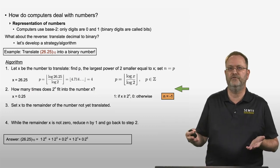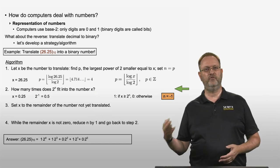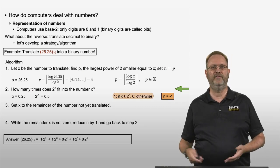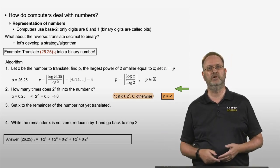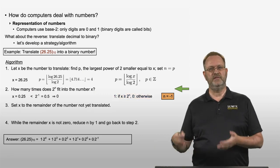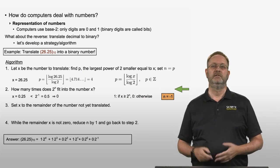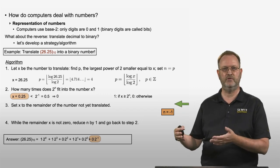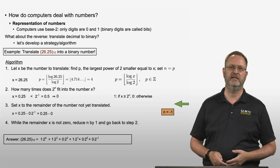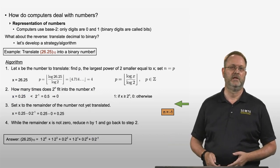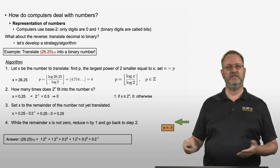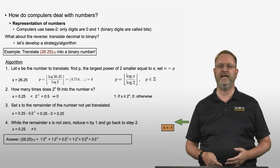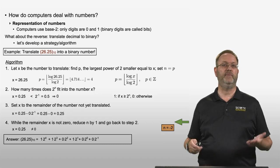Now we compare 0.25 to 2 to the power negative 1, which is one half (0.5). Since 0.25 is smaller than 0.5, the digit is 0. We write plus 0 times 2 to the power negative 1. Step 3: x remains 0.25 (subtracting 0 changes nothing). The remainder is still not zero, so we reduce n from negative 1 to negative 2 and go back to step 2.